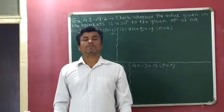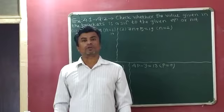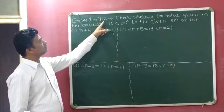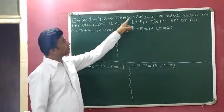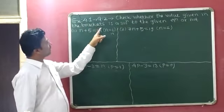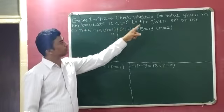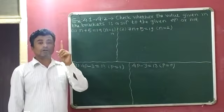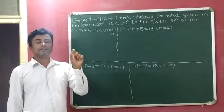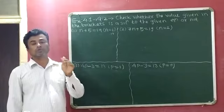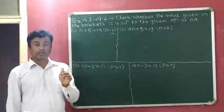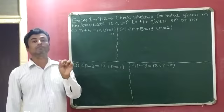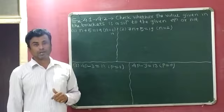Good morning students. Today we will discuss Exercise 4.1, question number 2. We have to check whether the value given in the brackets is a solution to the given equation or not. Here, one equation is given to us and inside the bracket, one solution is also given. We have to check whether that solution is the right solution of the given equation or not.